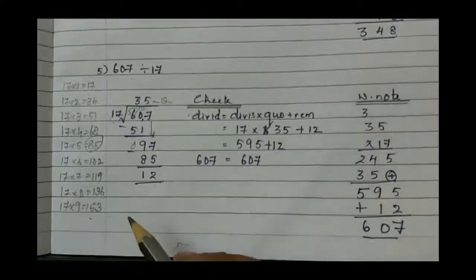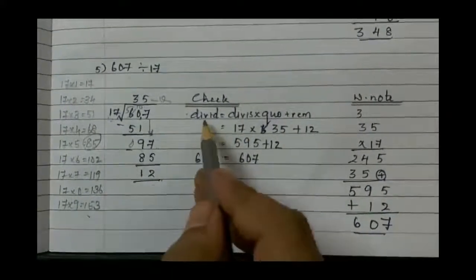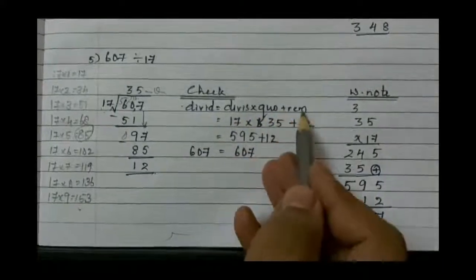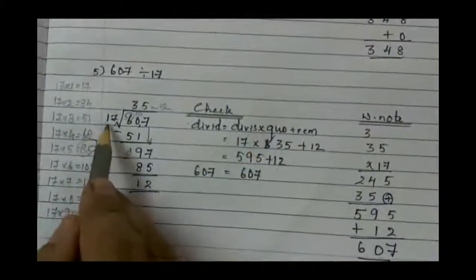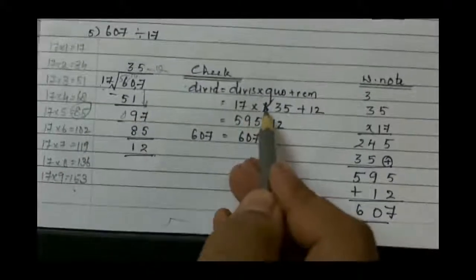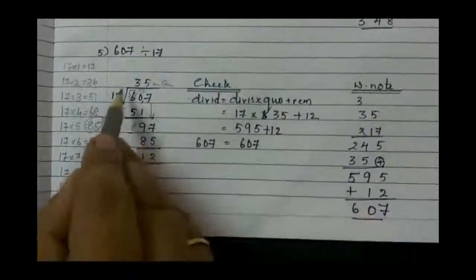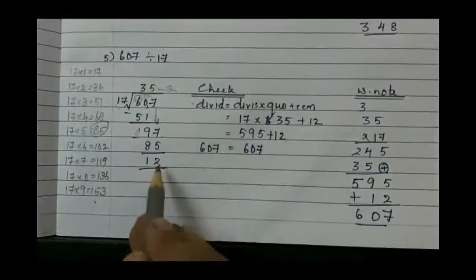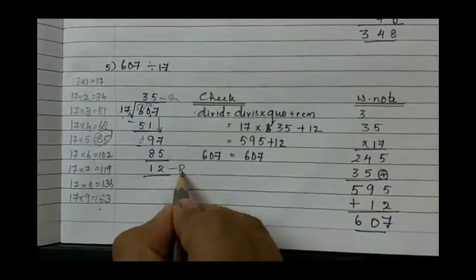So check it. Write down the formula: Dividend is equal to divisor into quotient plus remainder. Divisor is 17 into quotient is 35. Bring 35. And what is the remainder? That is 12. Write down 12.